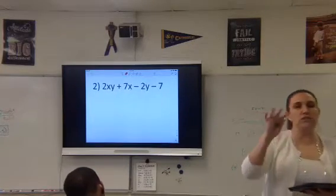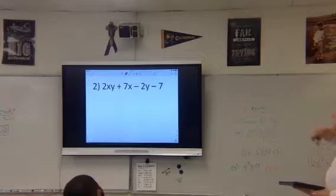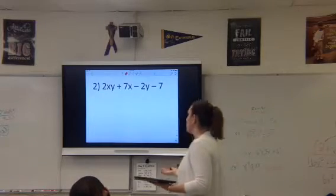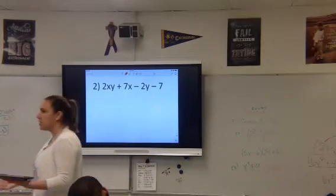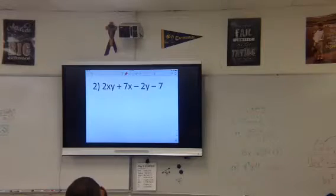First off, is there GCF between all four parts here? No. No. 2s and 7s. X, Ys. No, nothing. There's just nothing here. So then what was our next step? Group. So we're going to group it. Now keep that negative in the middle with the 2y. Keep that negative with that negative 2y there.